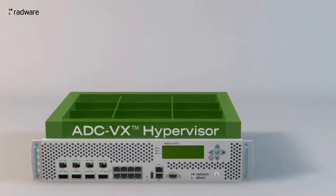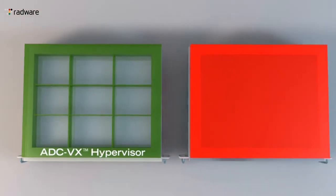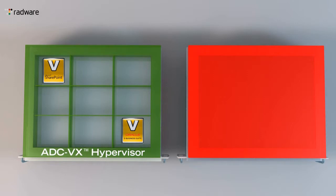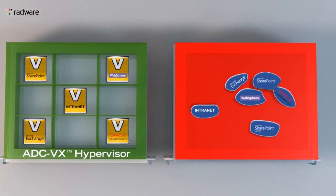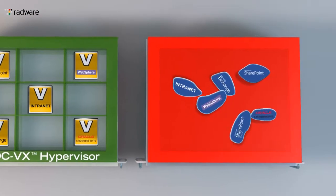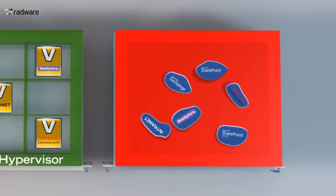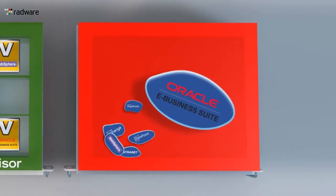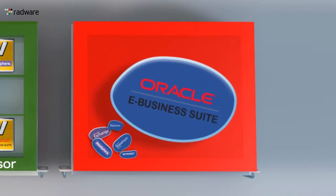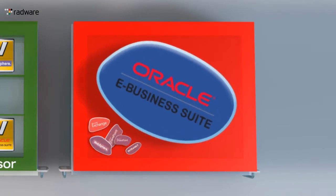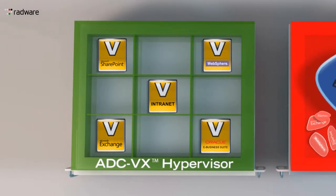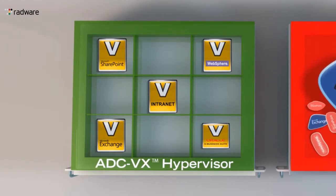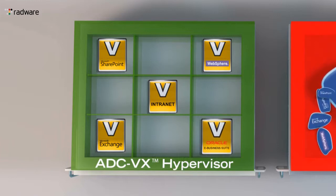Let's compare a shared ADC model to the ADC-VX model. With ADC-VX, each application receives its own VADC with a completely private environment, unlike in the shared ADC, where all applications run on the same device without separation. Since resources are shared between all applications, one application might impact the performance and SLA of the others. With ADC-VX, the resources of each VADC are reserved, resulting in predictable application performance and guaranteed SLA.